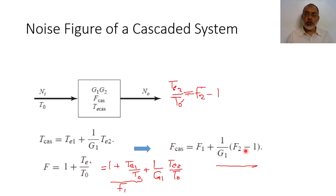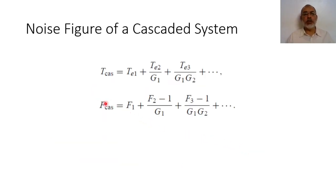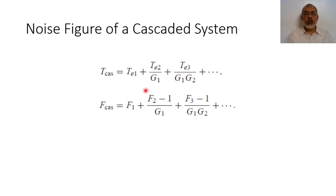This derivation was based on two cascaded networks. For the general case of any number of cascaded networks, the equivalent noise temperature is: TE1 + TE2/G1 + TE3/(G1·G2) + … And the equivalent noise figure is: F1 + (F2−1)/G1 + (F3−1)/(G1·G2) + … and so on.